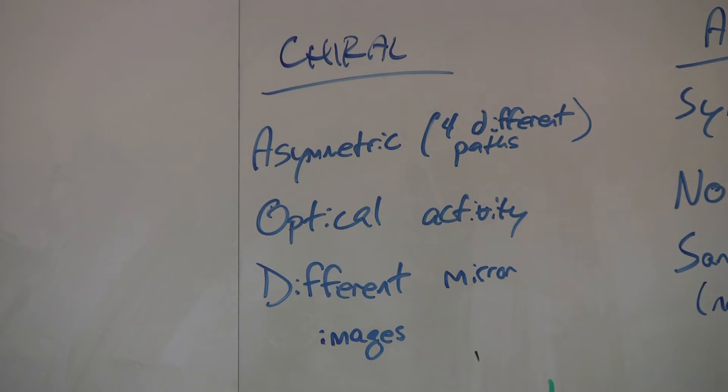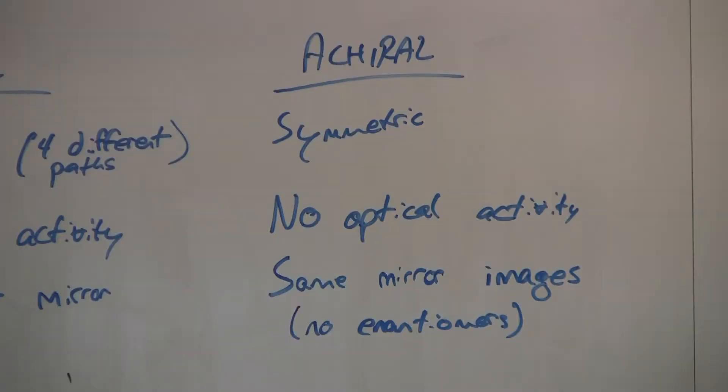Going onward, chiral sites have optical activity. It's because of those four different paths. With achiral sites, there is no optical activity.